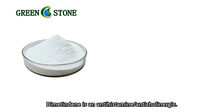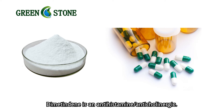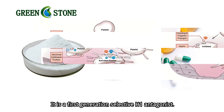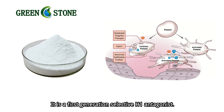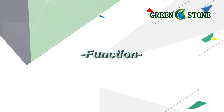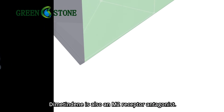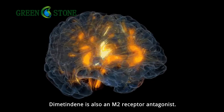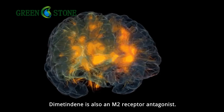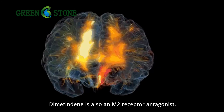Dimetindine is an antihistamine and anticholinergic. It is a first generation selective H1 antagonist. Dimetindine is also an M2 receptor antagonist.